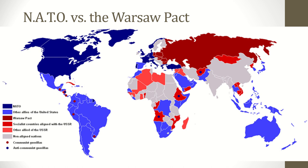Both sides are going to end up feeling very insecure in this new world order, so two competing alliances are created. The first is NATO — the North Atlantic Treaty Organization — consisting of the United States, Western Europe, and their allies. The Warsaw Pact, led by the Soviet Union, includes all the countries aligned with the Soviets. These two big military alliances are going to be pitted against each other for the entirety of the Cold War.